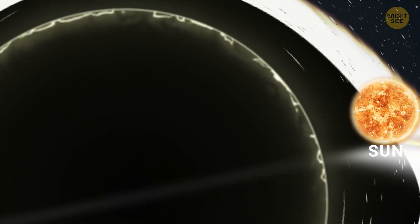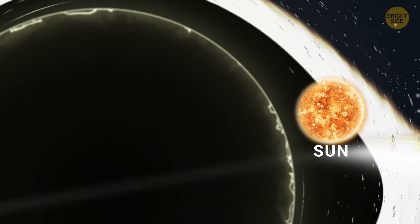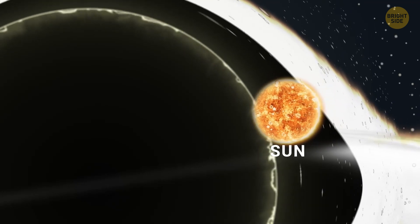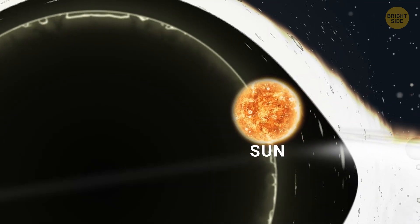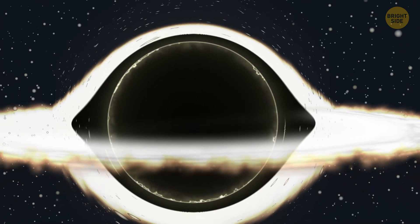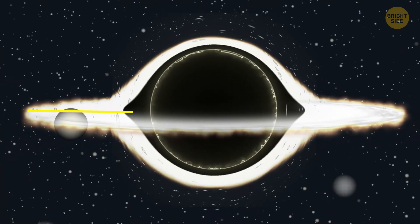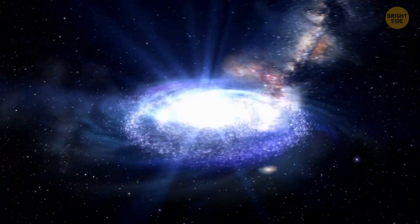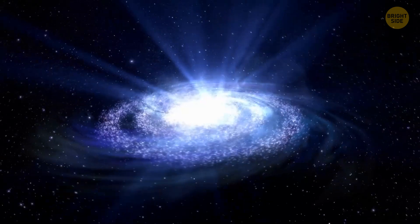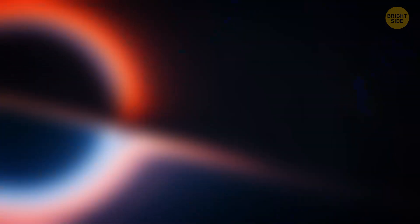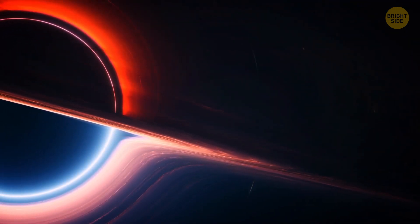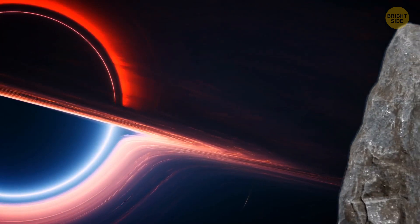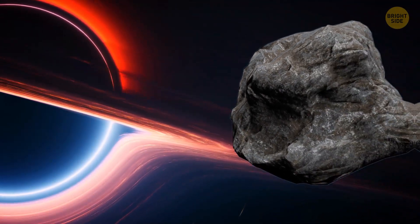Our black hole is called Sagittarius A star. It's a monster about 4 million times the mass of our sun. It's also about 32 million miles in size, almost like the distance between Mercury and the sun. But don't worry, it's not attracting the Milky Way inside it, and it's not going to eat us. These black holes are actually super small compared to the entire galaxy, so they can only eat whatever's around.